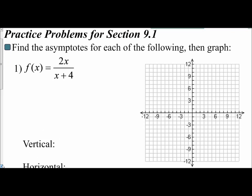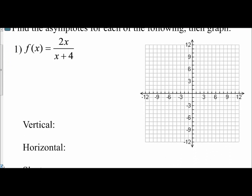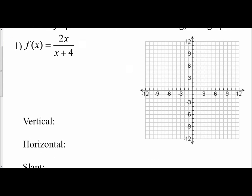Our first function is y equals 2x over x plus 4. The first thing I'm going to do is find the vertical asymptote. Remember, when you find the vertical asymptote, set the denominator — which is x plus 4 — equal to 0 and solve. So x equals negative 4 is my vertical asymptote.